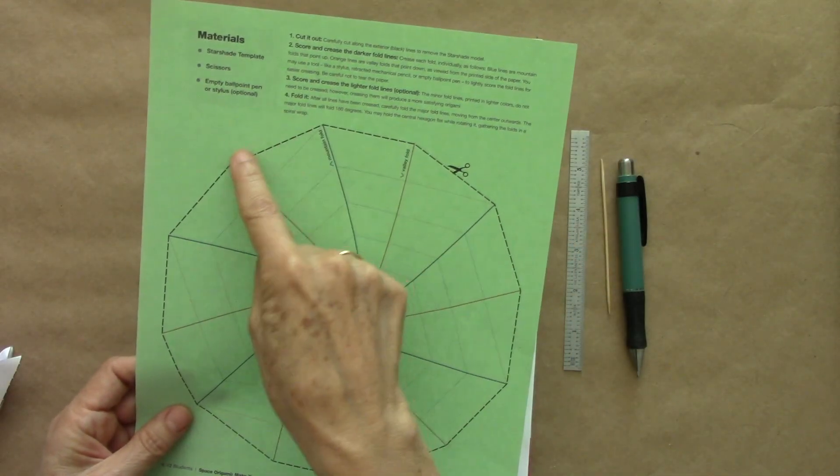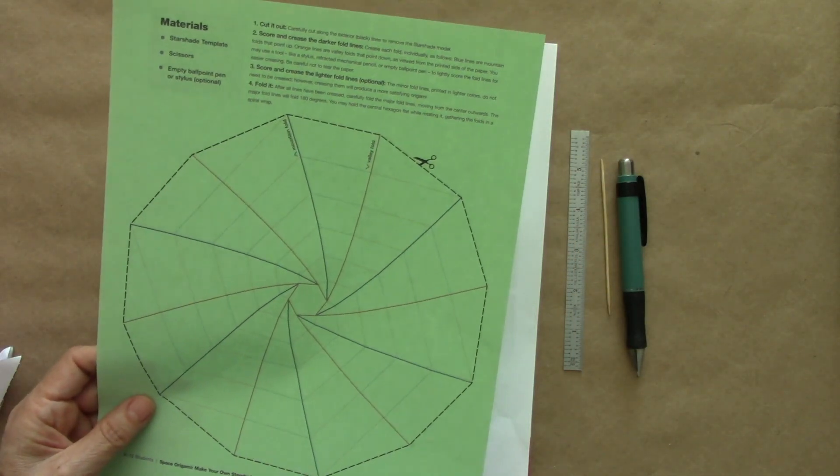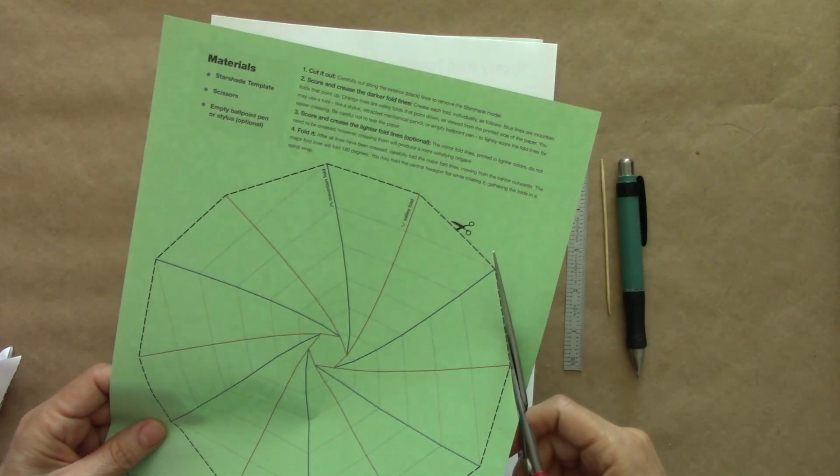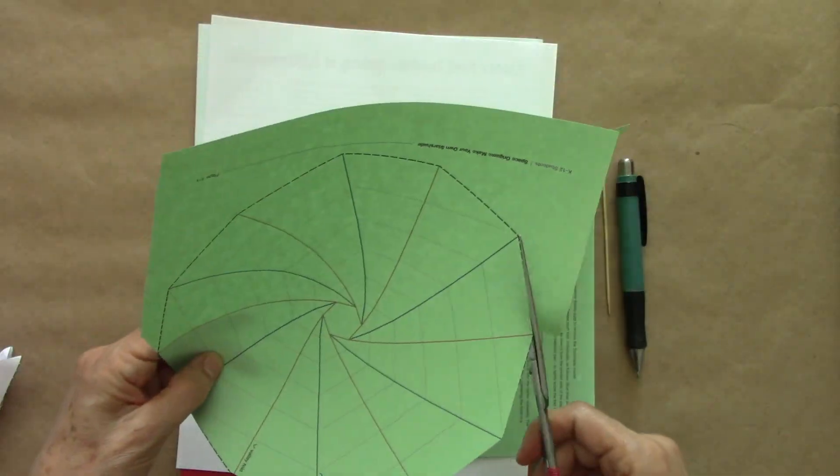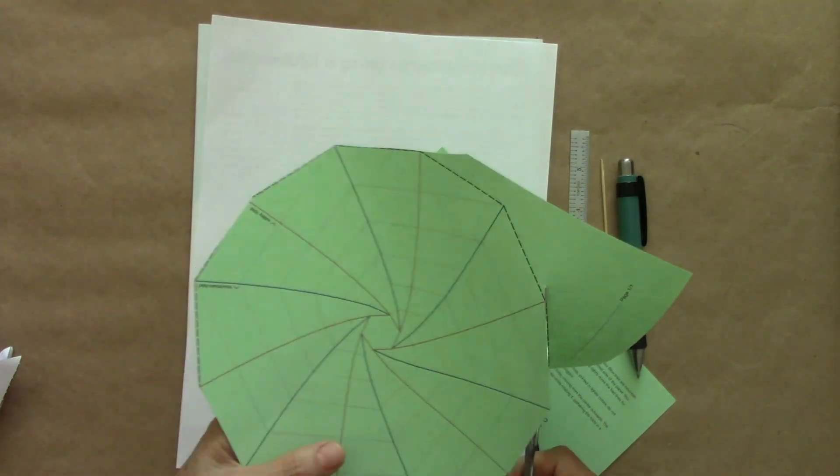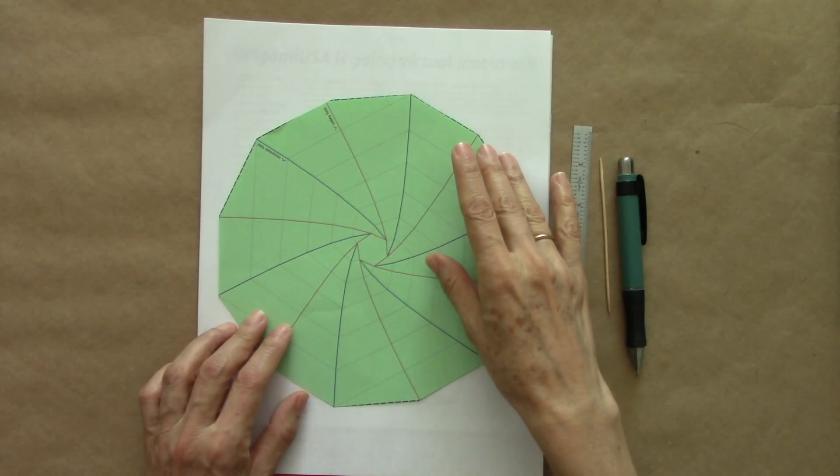First, we want to cut the pattern out with some scissors. There is some color coding here.